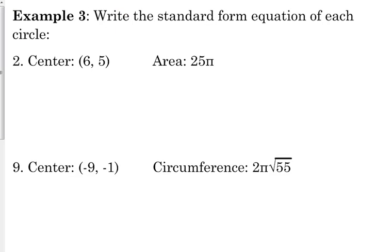Let's write the standard form equation of each circle. For the first one here, we're given that the center is 6, 5. Well, that part's easy. We know how to do that. That's x minus 6 squared plus y minus 5 squared, but we're not given radius this time. We're given the area. Well, we should be able to figure out the radius from the area, right? Let's think about this. Area of a circle is equal to pi r squared.